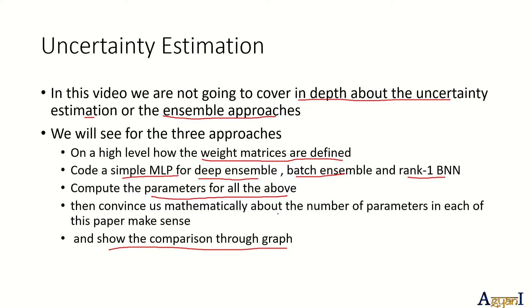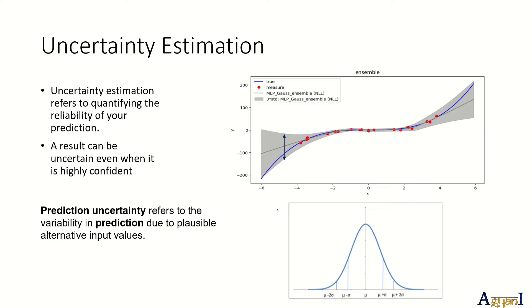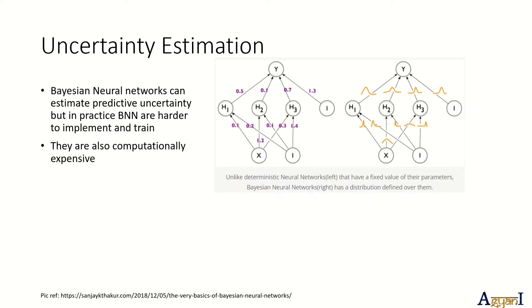Uncertainty estimation refers to quantifying the reliability of your prediction. A result can be uncertain even when it's highly confident, so in order to make sure the results predicted are reliable, we use the concept of uncertainty estimation. For example, here you can see some predictions that have huge deviations — that's high uncertainty and we cannot rely on them for real-life decisions. Prediction uncertainty refers to variability in the prediction due to plausible alternate input values.